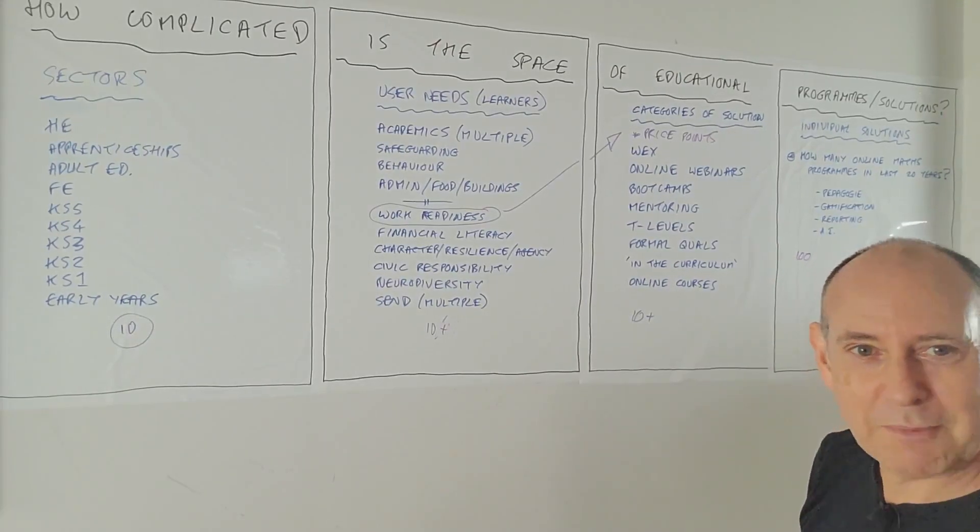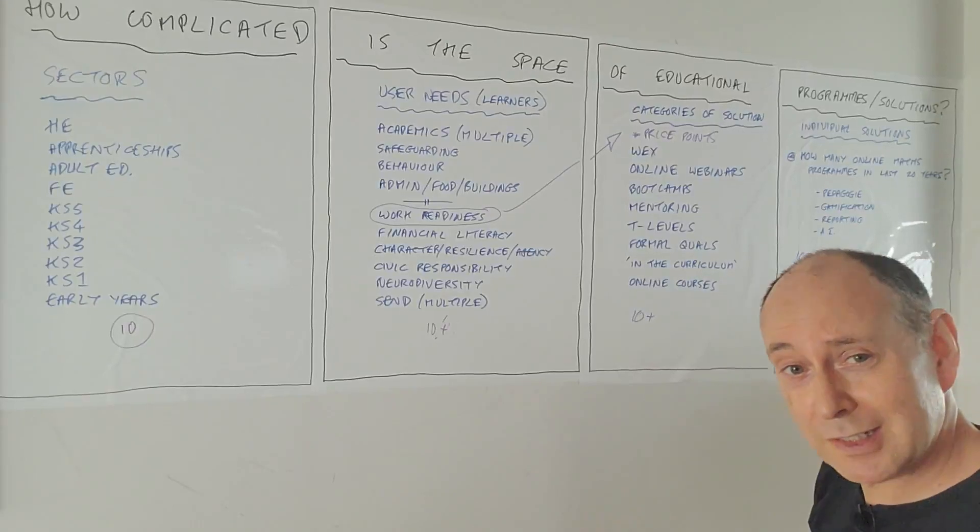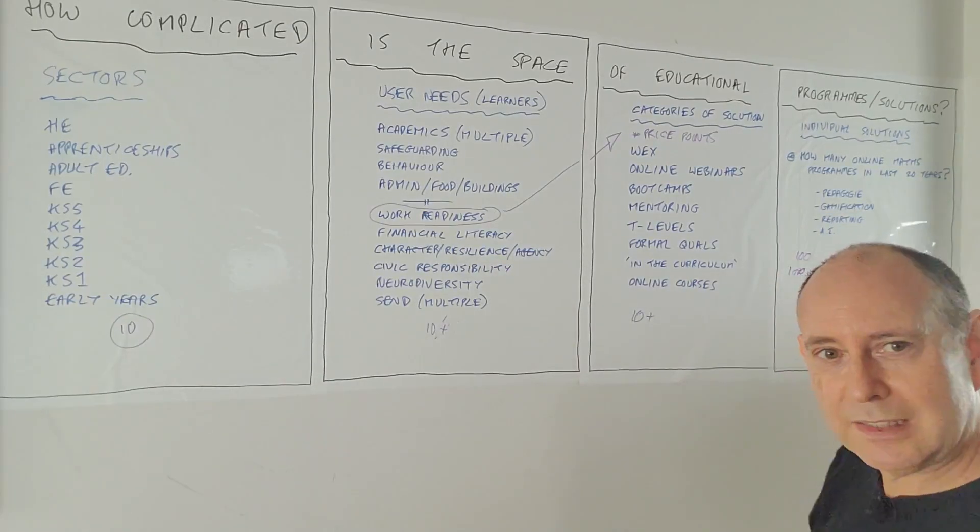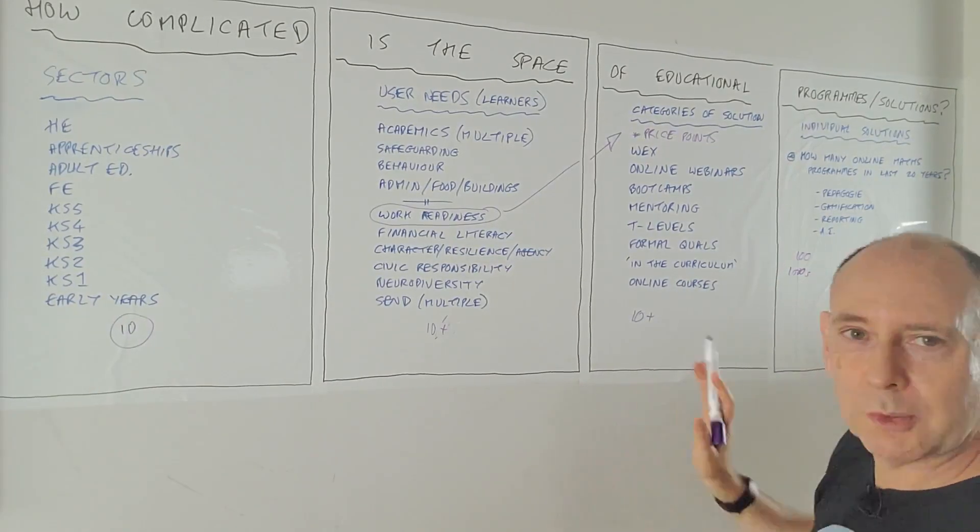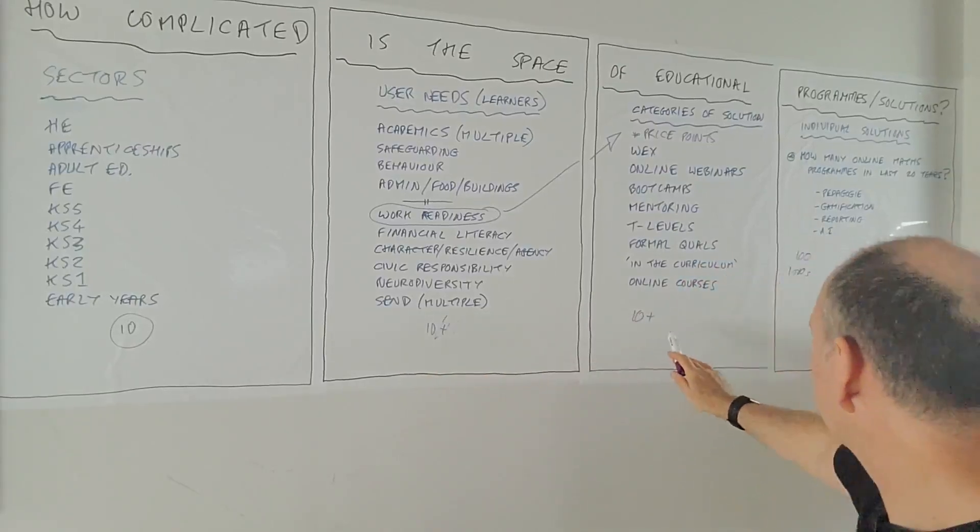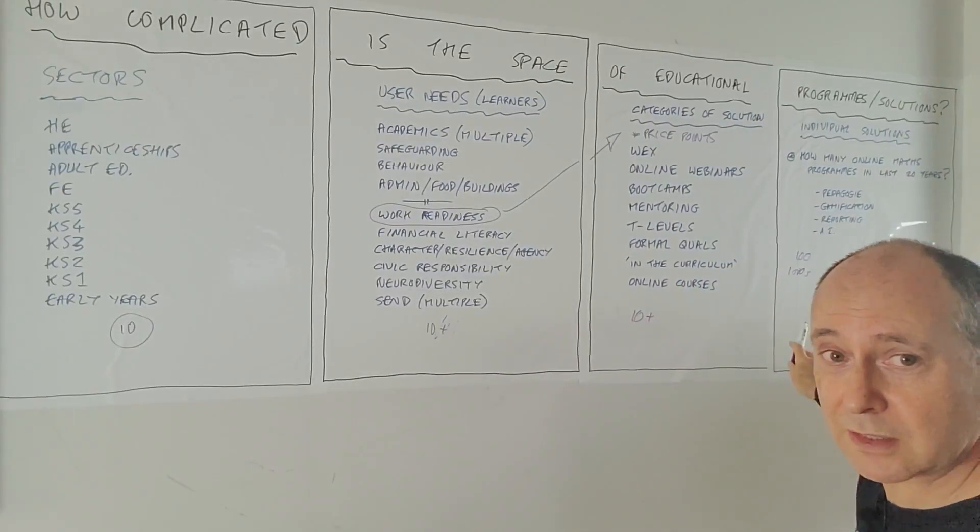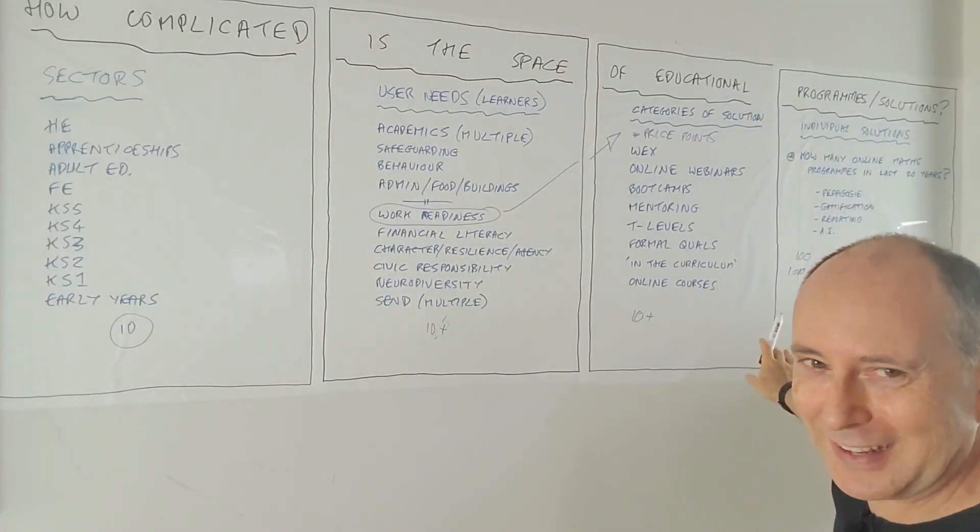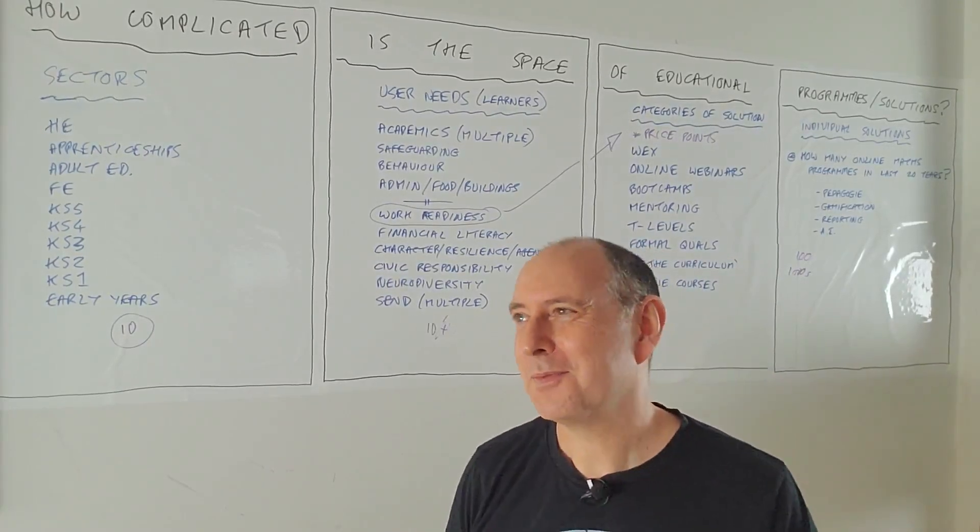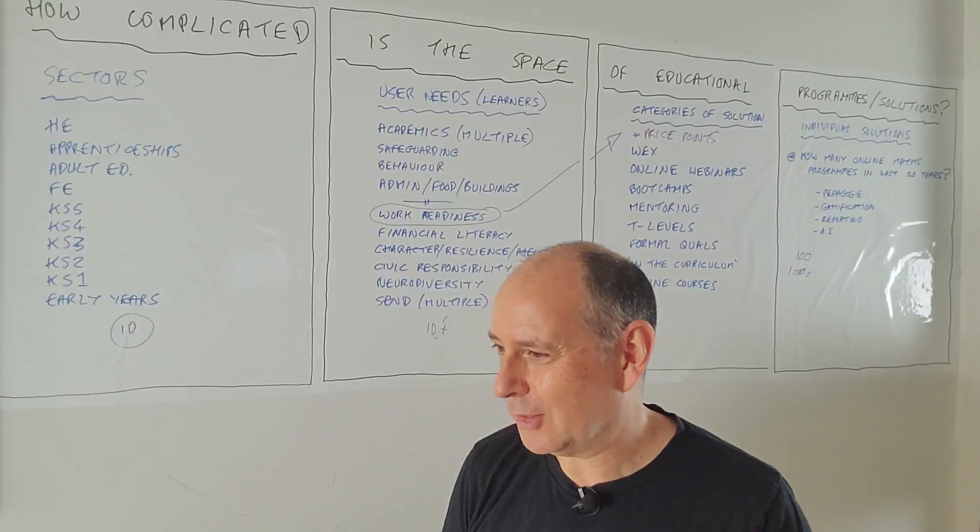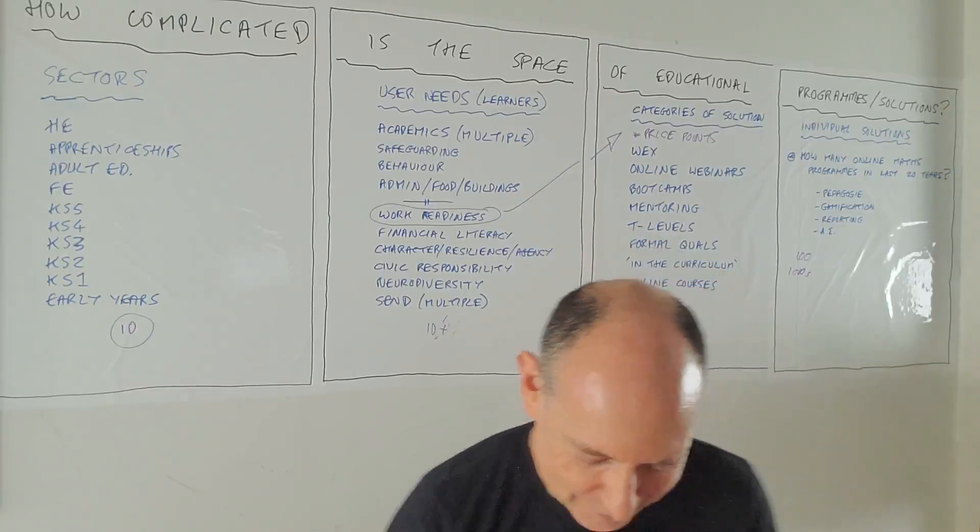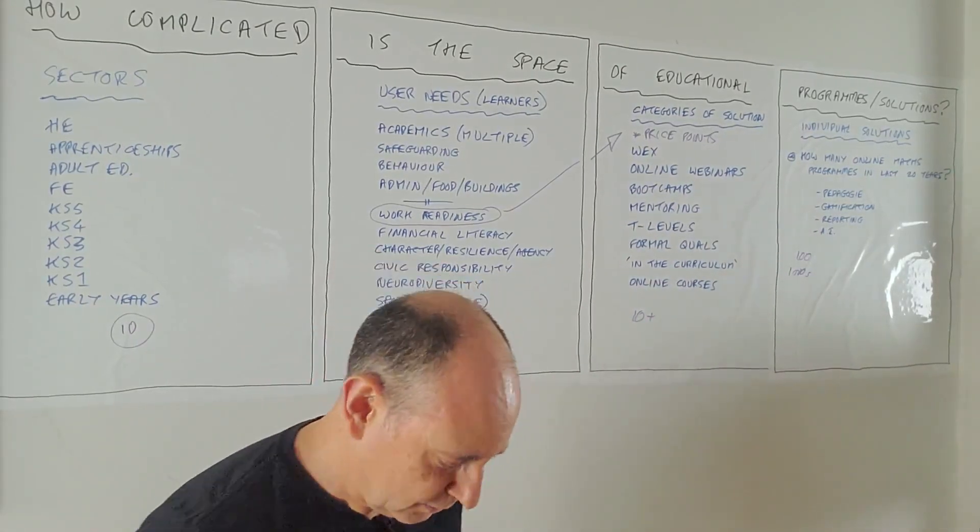And that's in the UK alone. So internationally, it's thousands. And that's just GCSE maths. So if we want to understand how complicated the space is, we've got to multiply 10 by 10 by 10 by 100 or thousands. So it's extremely complicated. And the complexity is, I don't know, it's either hidden or we'll just put that in a box. It's all too complicated and not think about it. It's kind of where we are now.